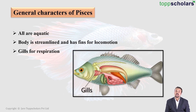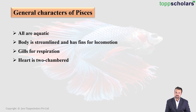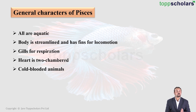They have gills, which are used for respiration, and the heart is two-chambered. The two chambers are the upper chamber being the auricle and the lower chamber being the ventricle. They are all cold-blooded animals, meaning poikilothermic, which means they are not able to control or maintain a constant body temperature — it changes with the surrounding environment.